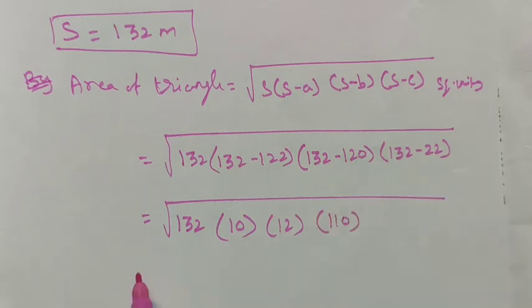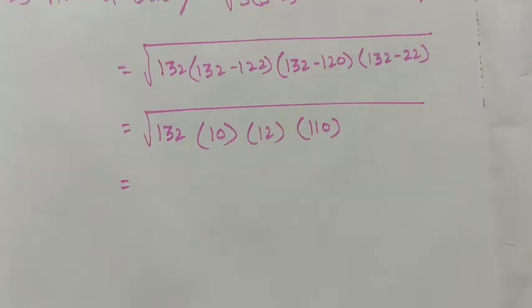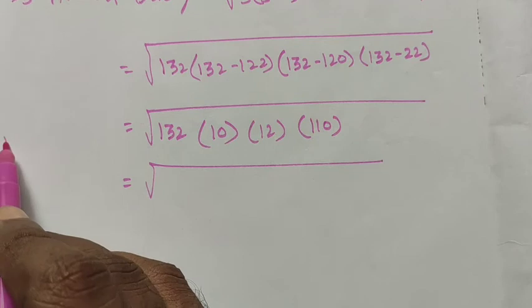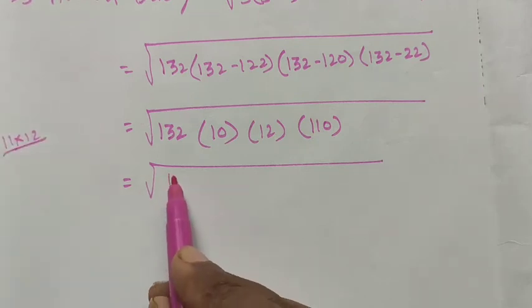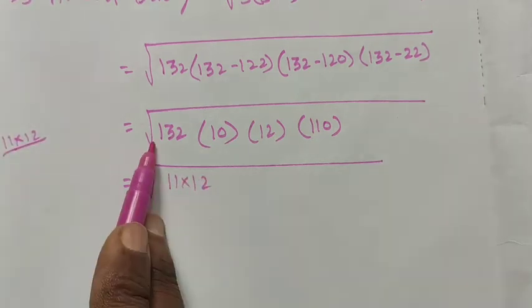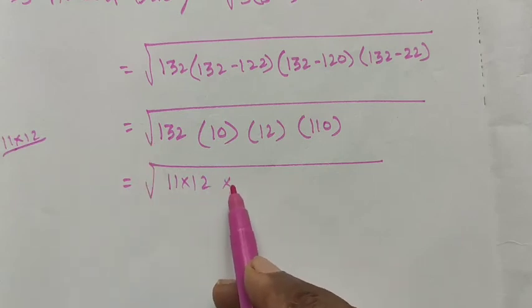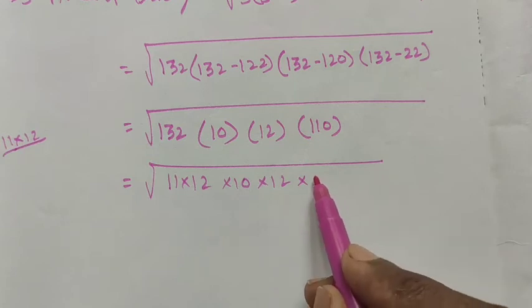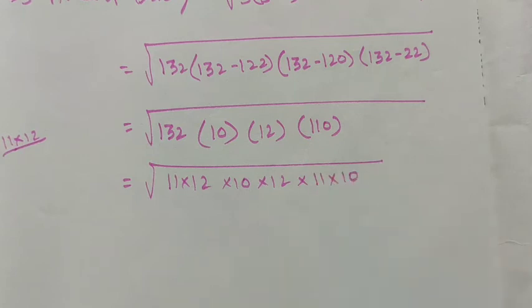This term is equal to: I am going to expand this term. 132 can be written in the form of 11 times 12, and then times 10, times 12, times 110. 110 can be written in the form of 11 times 10.